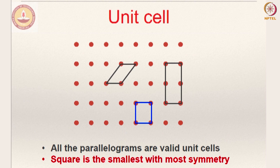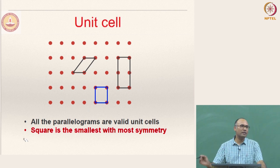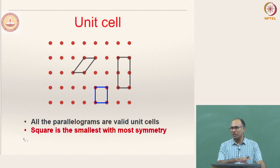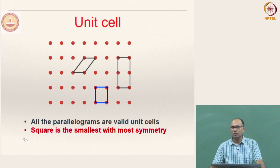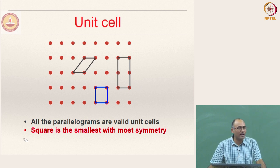In the last class we looked at the concept of unit cell. If you have a lattice, you can in principle identify infinite number of possible unit cells that can fill the entire space. But the question is: what should be the geometry of that unit cell? Should it always be a parallelogram, or can it be triangular in 2D, and so on?